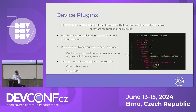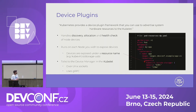Device plugins. What is it? It's a way to advertise resources — more commonly hardware resources — to Kubernetes. It's a framework that you implement, and you can then expose some devices to be used by your workload. The three main characteristics of the device plugin are: it needs to handle the discovery of the devices, allocation, and health checks.